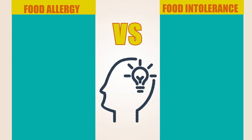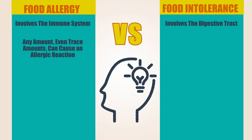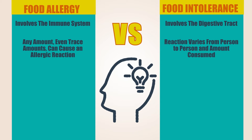To begin, a food allergy involves your immune system, while a food intolerance involves your digestive tract. With a food allergy, any amount — even trace amounts — can cause an allergic reaction. With a food intolerance, the reaction varies from person to person and the amount consumed.